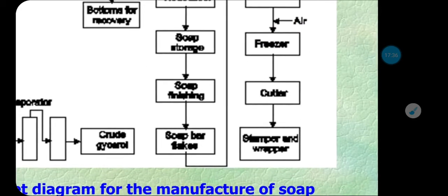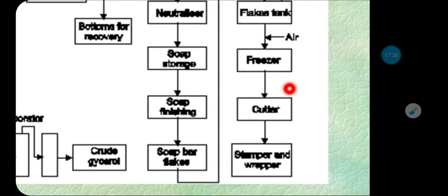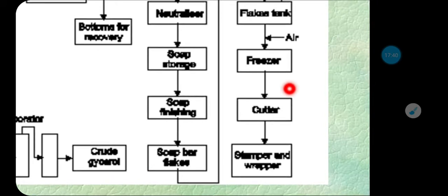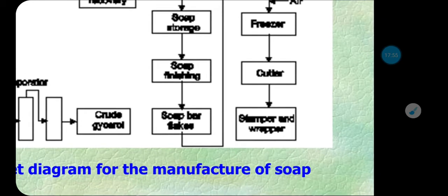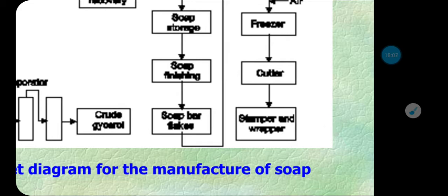After cooling, this jelly-type or highly viscous liquid soap gets solidified. It is then cut by knives into different shapes and sizes. After cutting the soap cake, it is stamped and then wrapped with a wrapper for the market.